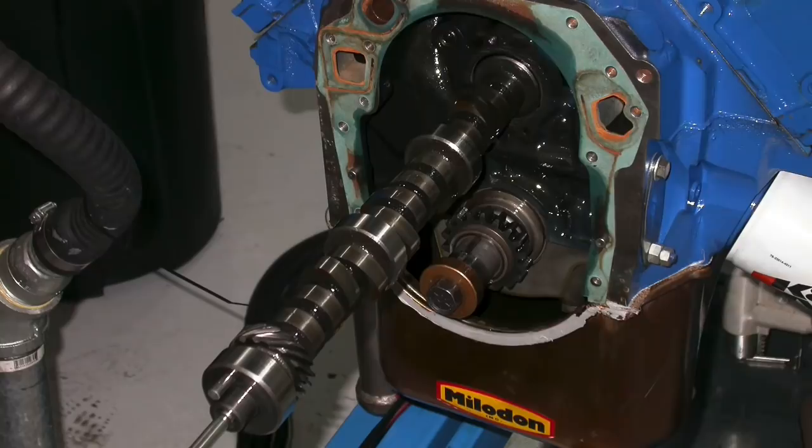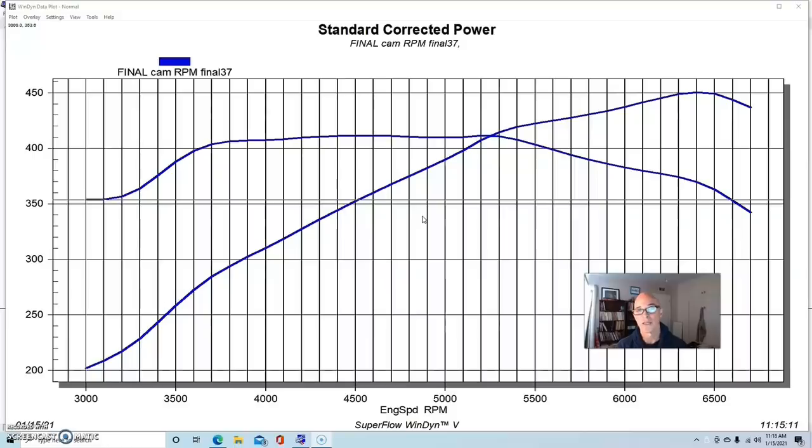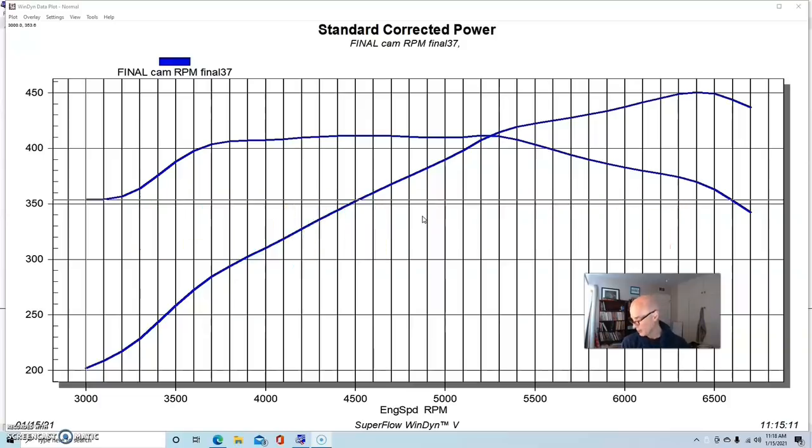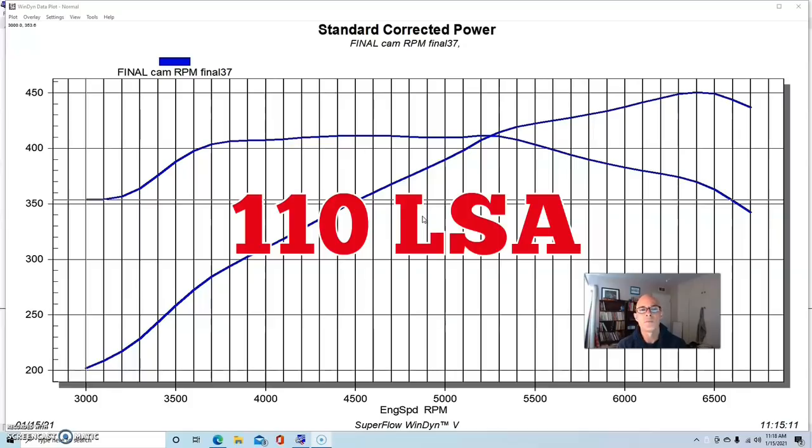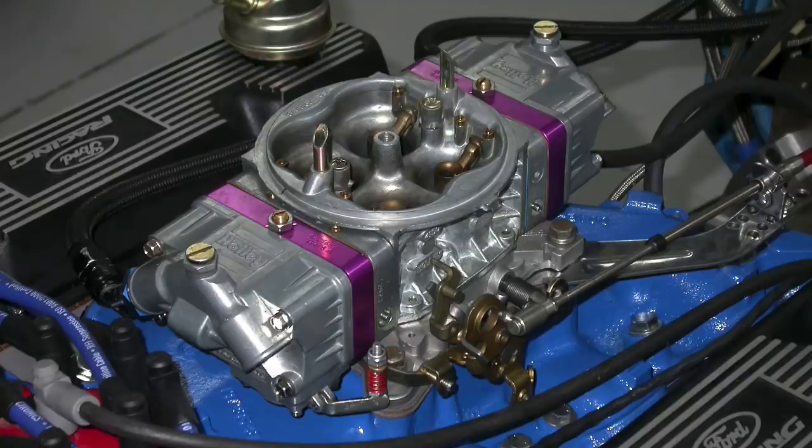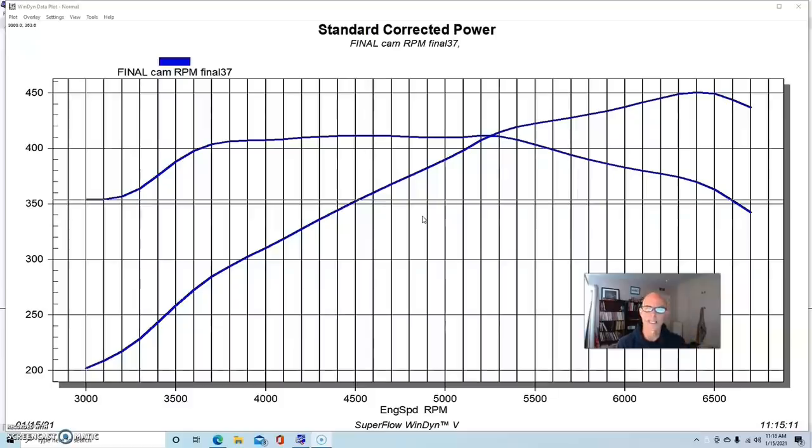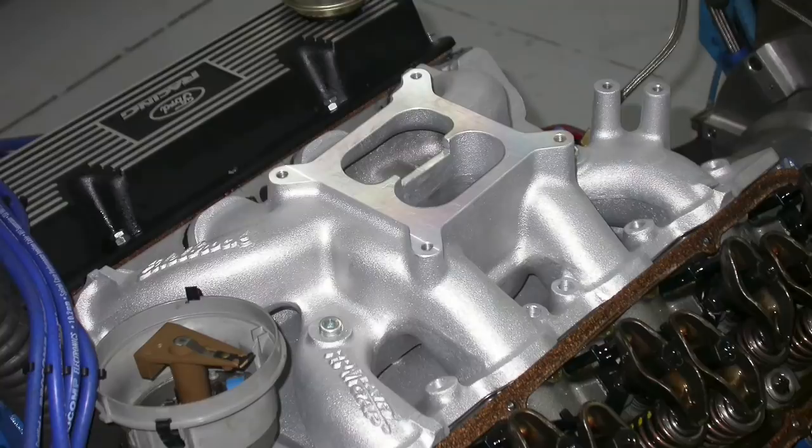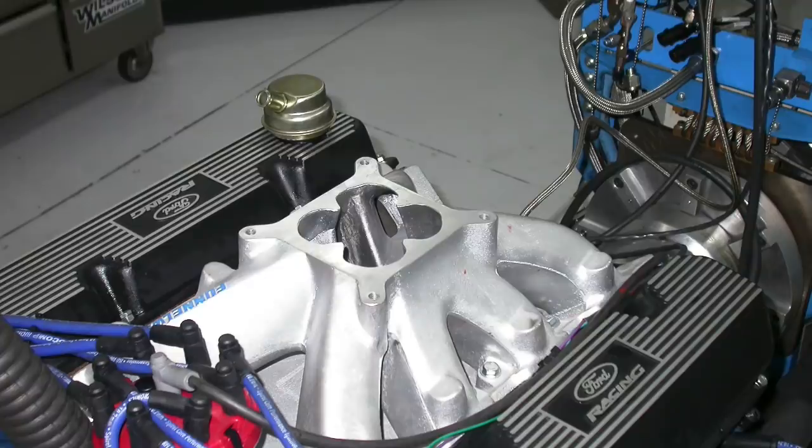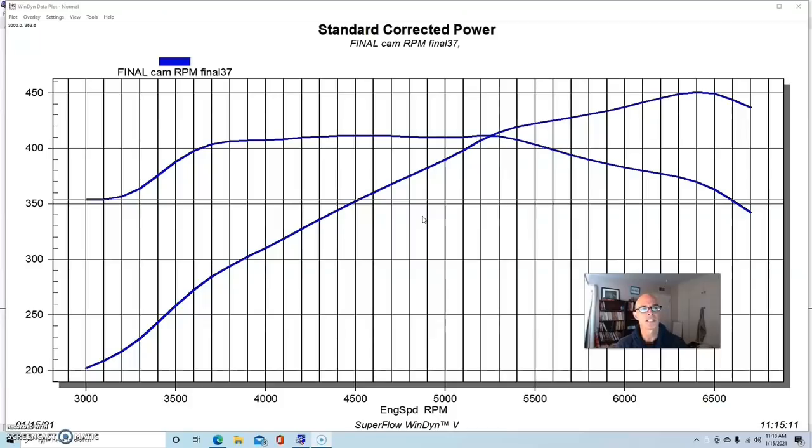We ran a hydraulic flat tappet camshaft for this test. It was a Comp Extreme Energy 284 hydraulic flat tappet. And it was a 584-588 lift, a 240-246 degree duration split, and a 110 degree lobe separation angle. All the testing was run with a 750 HP carburetor. This was actually before the XP stuff. It may have been before the XP stuff was even available. We compared the Edelbrock RPM air gap intake manifold for the 351 versus a Parker funnel web for the 351. And this was an interesting test for a number of reasons.